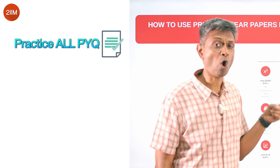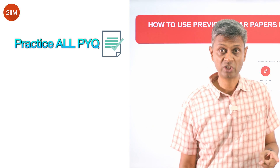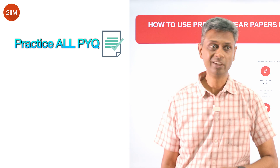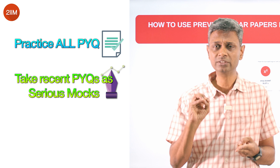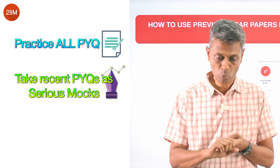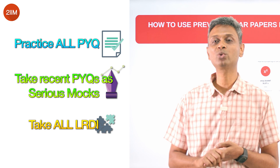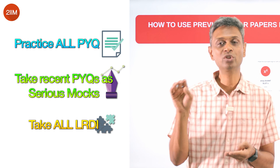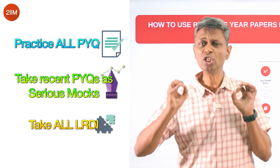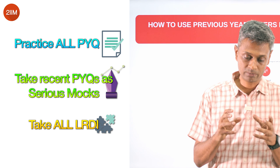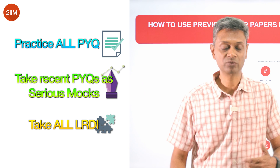First key point: make sure you have seen all these questions at least once before CAT — there are about 80 to 100 hours of preparation sitting here for free. Second: take a few as full mock exams. Third — and most importantly — no matter what you do, consume 100% of all the LRDI questions here. Go through them, try to solve them, see the solution, and see what you could have improved. This is probably the most important nugget from now until CAT. Best wishes.